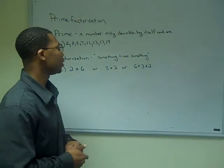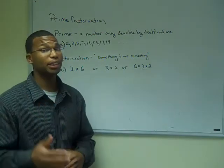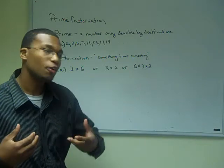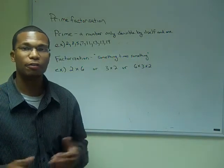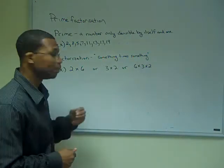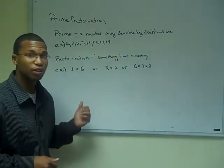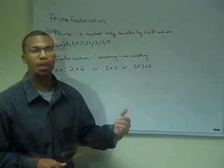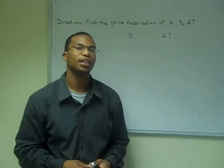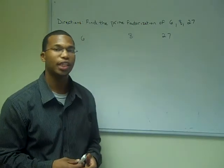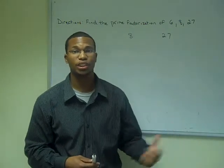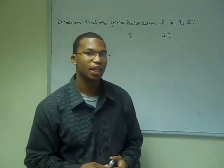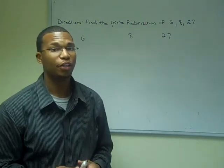Factorization simply means something times something. So if I was asked for examples of a factorization, you can say 2 times 6, or 3 times 2, or 6 times 3 times 2. Now let's say I was asked to find the prime factorization of the numbers 6, 8, and 27. In this case, a factorization tree would be very useful.